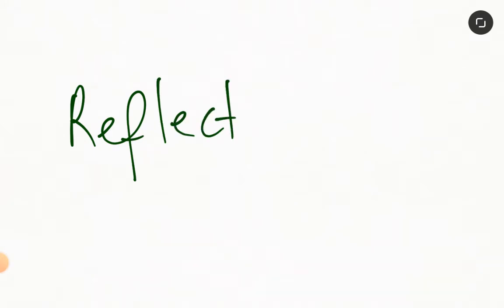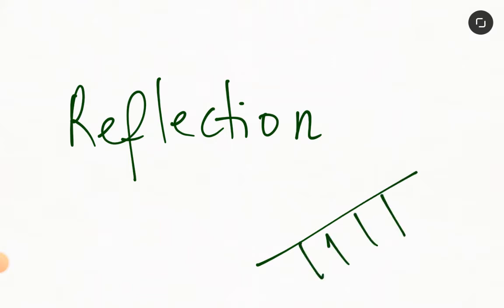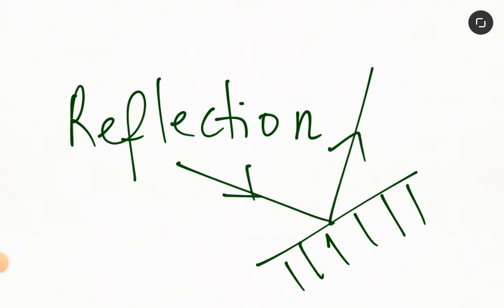In our previous discussion, we discussed about reflection of light. We gave the definition of reflection of light and we said that it was the bouncing back of light when it hits a reflecting surface. So if this is a mirror and light falls on it, then the light is pushed back. The light falling on the mirror is called incident ray, and the light ray pushed back, we call it reflected ray.